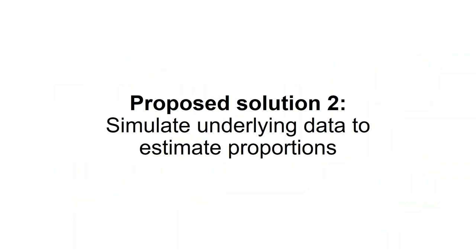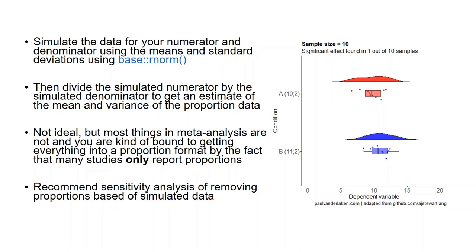Well, the only way of dealing with this problem that I can see is to simulate the underlying data based on those means and variances of the numerator and denominator that you do have, and then to divide them by each other in order to estimate the mean and variance of the proportion. And this is fairly easy to implement using base functions in R. You can plug in your means and standard deviations of your numerator and denominator variables and simulate vectors of simulated data. And then what you can do with those is you divide one by the other to calculate a simulated vector of proportions. And then from that, you can calculate a simulated mean and variance of a proportion.